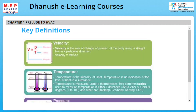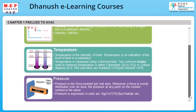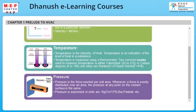Temperature is the intensity of heat and an indication of the level of heat in a substance. Temperature is measured using a thermometer. Temperature is either Fahrenheit, 32 to 212 degrees, or Celsius, 0 to 100 degrees. Others are Rankine, which is degrees centigrade plus 273, and Kelvin, which is Fahrenheit plus 476.